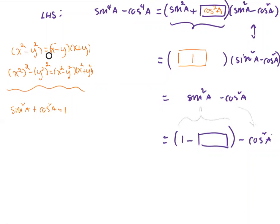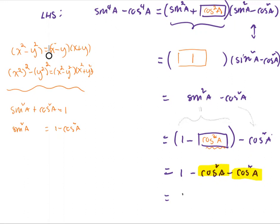That means the expression 1 minus the missing part must be equivalent to sin²A. Back to the Pythagorean Identity: sin²A equals 1 minus cos²A. So we replace the missing part with cos²A. Expanding, we get 1 minus cos²A minus cos²A. Combining like terms, negative cos²A minus cos²A equals negative 2cos²A, giving us 1 minus 2cos²A.